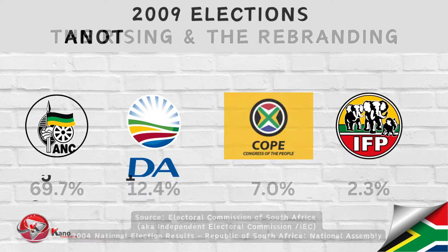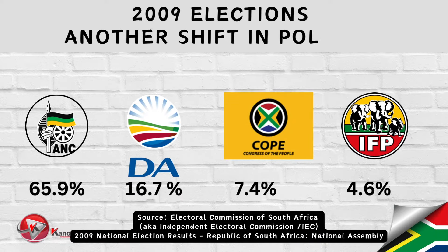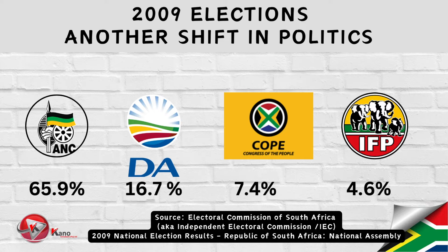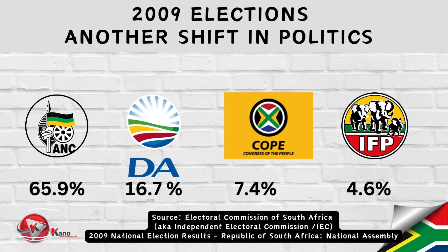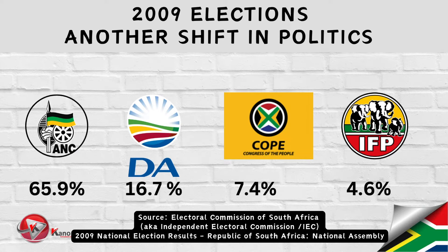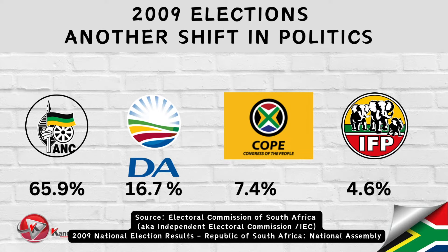Fast forward to 2009 — South Africa was once again at the polls. The ANC secured yet another victory. However, it was clear that the political landscape in the country was shifting. The DA gained momentum, becoming a formidable opposition force. This election also marked the emergence of new players on the political stage, such as the Congress of the People, also known as COPE, which was a breakaway faction from the ANC.